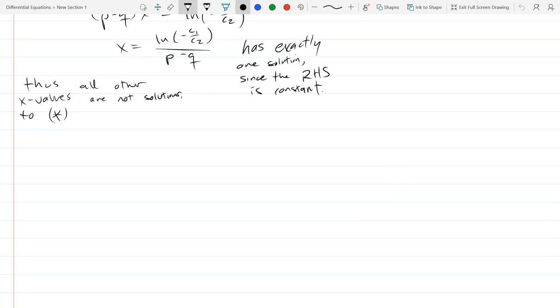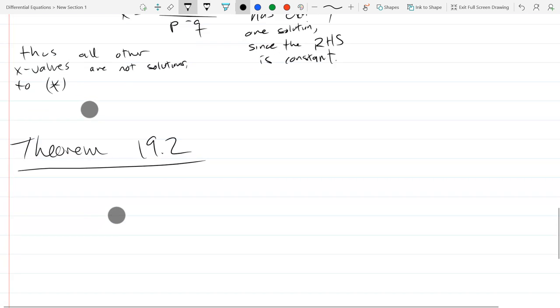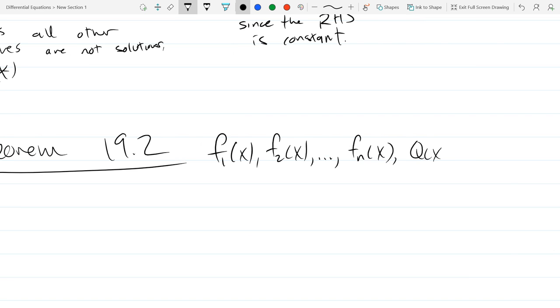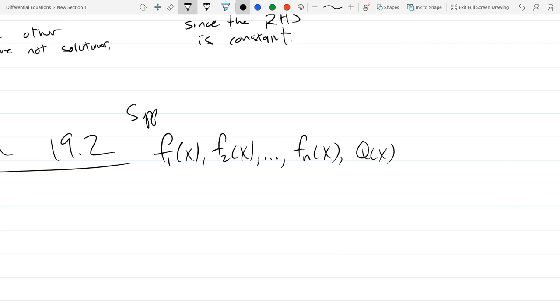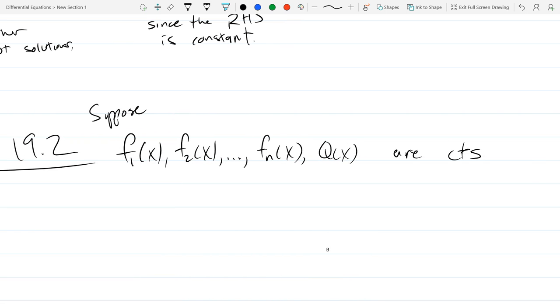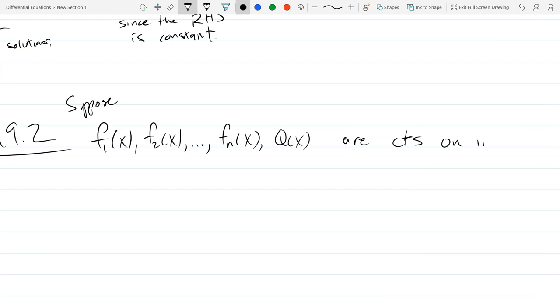So this is theorem 19.2. And we have n continuous functions. So we're going to begin with writing those down: f1, f2 of x, dot dot dot, fn of x. So suppose, and q of x. So the reason we're just writing interval i, it could be open or closed, or half open, half closed. It doesn't matter.